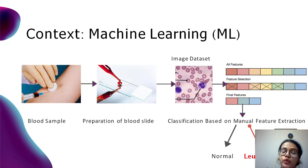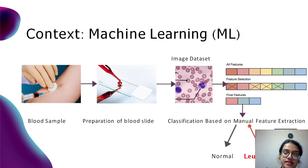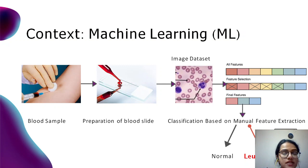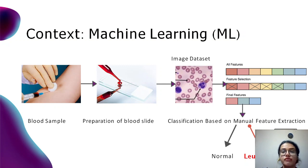In the context of machine learning, the first two steps are the same: the blood sample is taken and the blood slide is prepared. We then have several images of the blood slide, which form an image dataset.